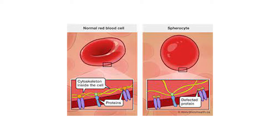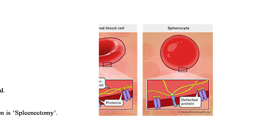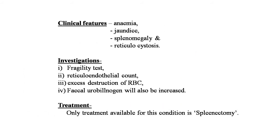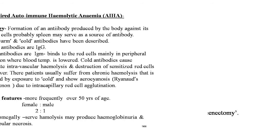Clinical features of hereditary spherocytosis are anemia, jaundice, splenomegaly, and reticulocytosis. Investigations include the fragility test, reticulocyte count, evidence of excess destruction of RBCs, and increased fecal urobilinogen. The only treatment available for this condition is splenectomy.